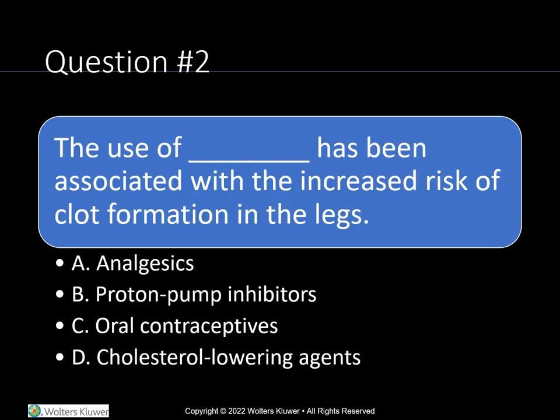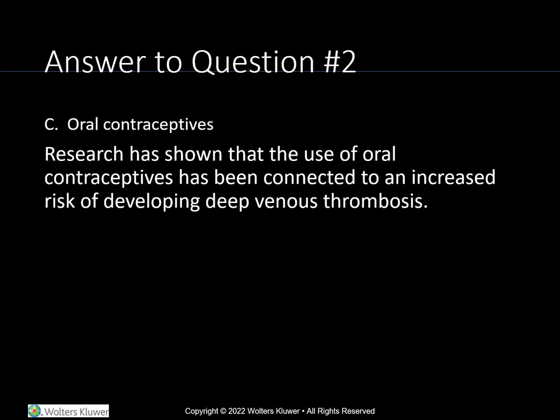The use of blank has been associated with the increased risk of clot formation in the legs. A, analgesics; B, proton pump inhibitors; C, oral contraceptives; or D, cholesterol lowering agents. The answer is C, oral contraceptives. Research has shown that the use of oral contraceptives has been connected to an increased risk of developing deep vein thrombosis.